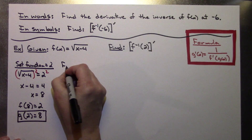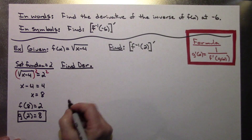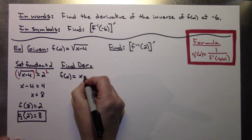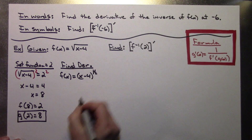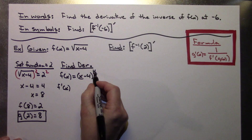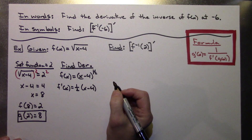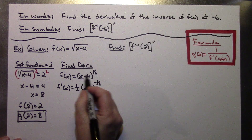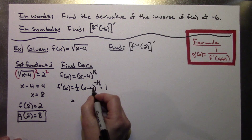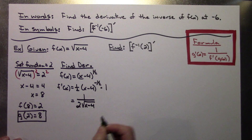Next, find the derivative. I'm going to rewrite the function as x minus 4 raised to the 1/2 power to make taking the derivative a little easier. Taking the derivative using the power rule with chain rule: I pull down the 1/2, giving me 1/2 times (x minus 4) to the negative 1/2, times the derivative of the inside which is just 1. Cleaning this up, that gives me 1 over 2 times the square root of x minus 4.